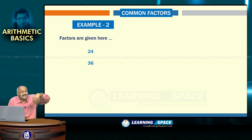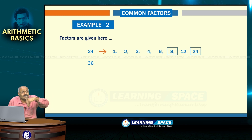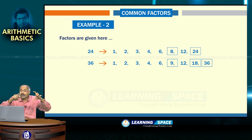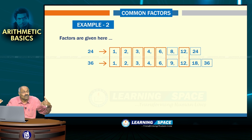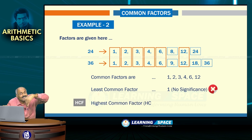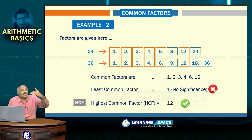Let us take one more example: 24 and 36. The factors for 24 are 1, 2, 3, 4, 6, 8, 12, and 24. The factors for 36 are 1, 2, 3, 4, 6, 9, 12, 18, and 36 — a total of 9 factors. The common factors for 24 and 36 are 1, 2, 3, 4, 6, and 12. As usual, the least common factor is 1 and has no significance. The highest common factor is 12, so the HCF for 24 and 36 is 12.